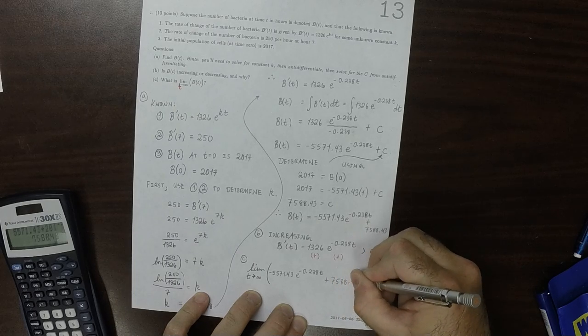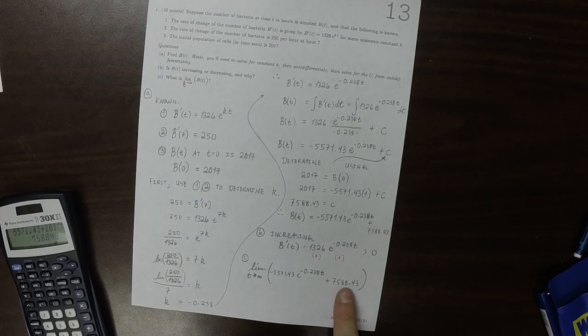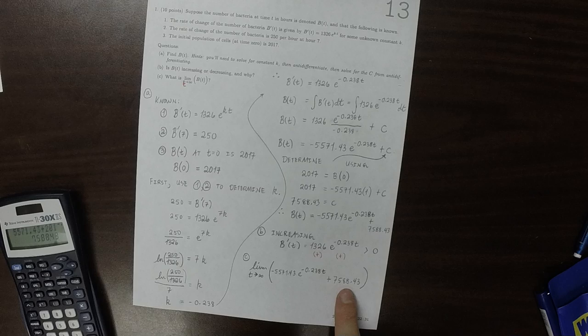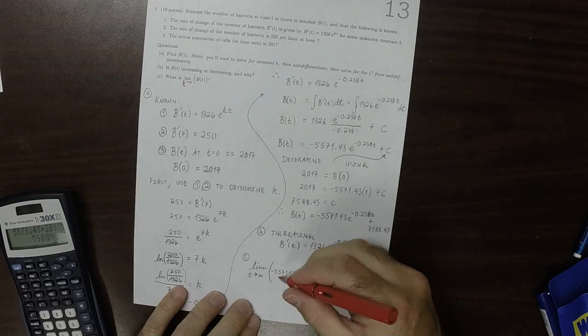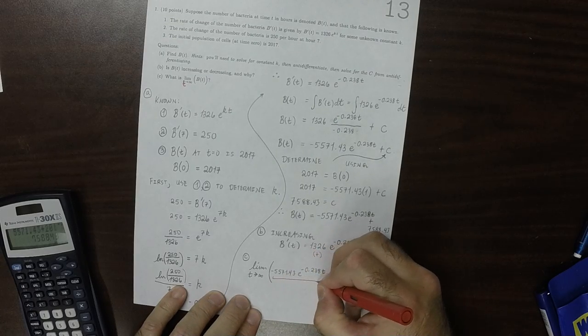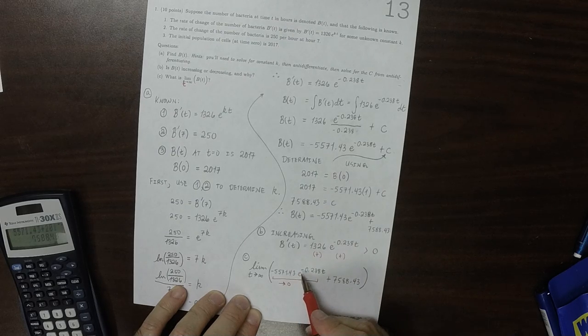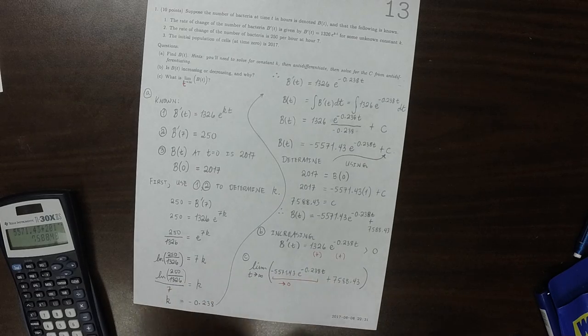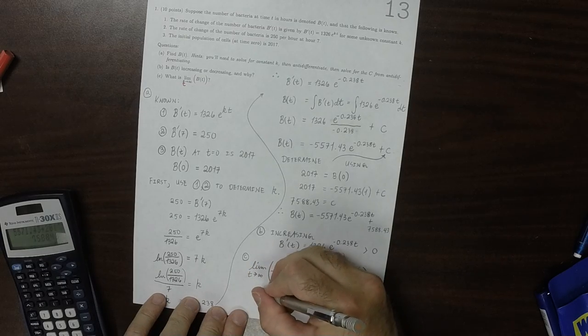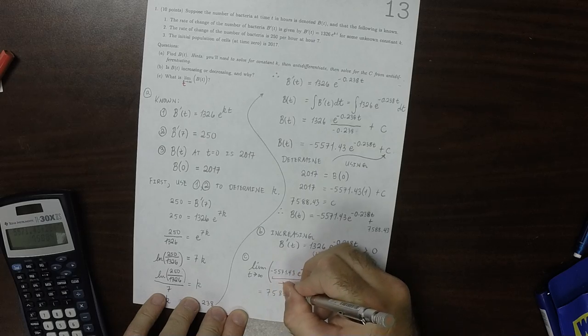Well, this number is constant, so its limit is itself, whereas this term is going to go to zero. So this term goes to zero because the exponential of negative something will go to zero as that gets big. And so the answer is just 7,588.43.